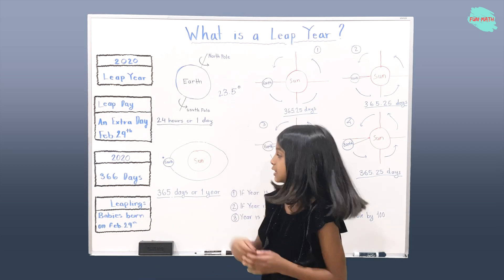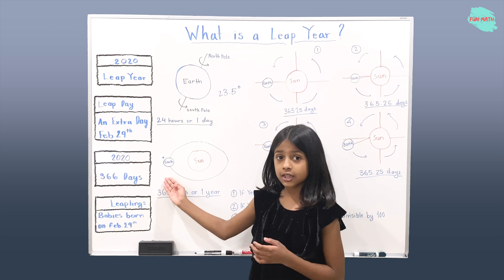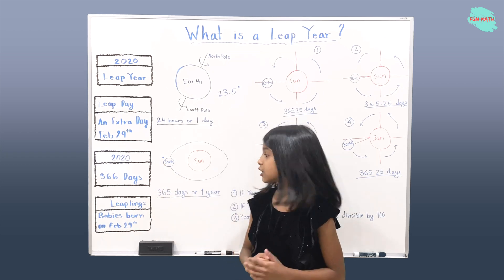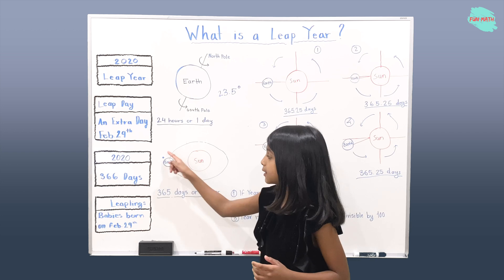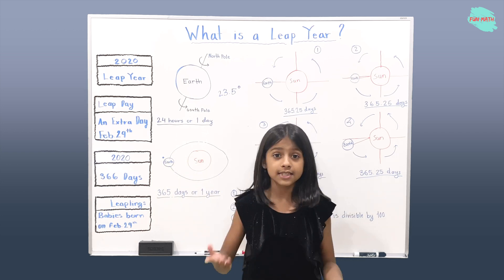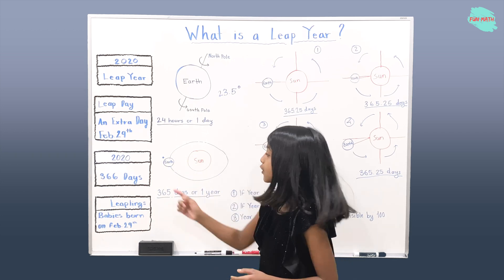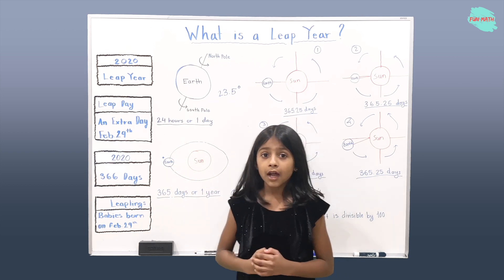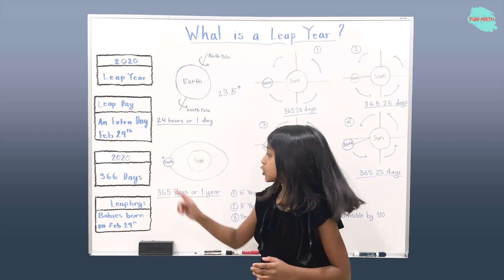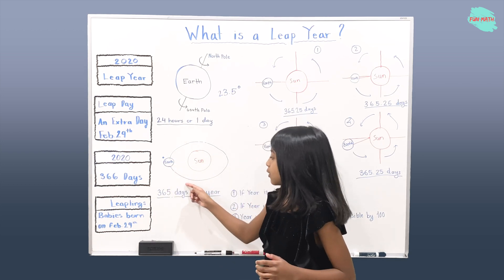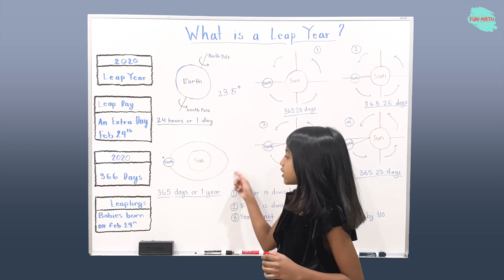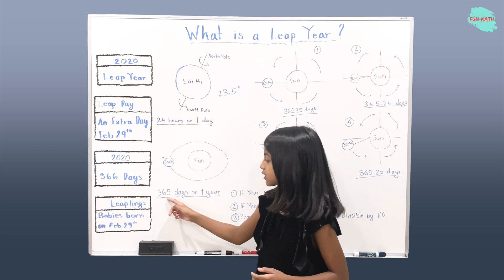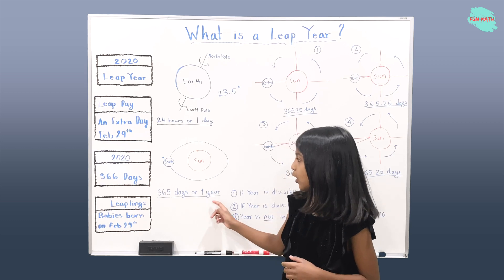Here you can see the Sun, the Earth, and the Moon. The Moon is orbiting the Earth, and at the same time, the Earth is also orbiting the Sun. For the Earth to complete one rotation around the Sun, it will take 365 days, or one year.